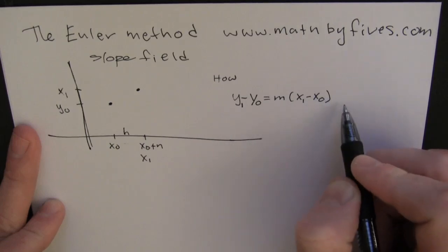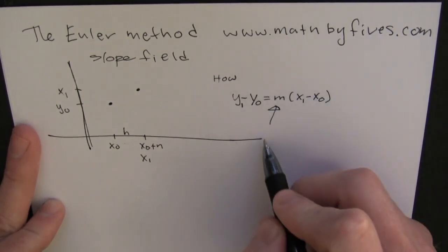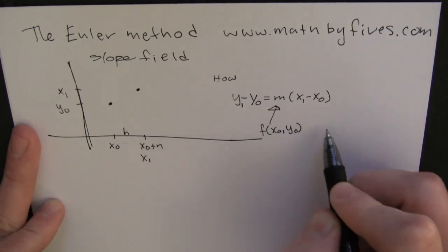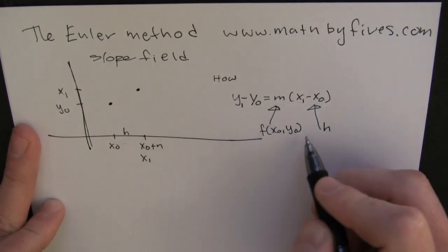So then, what are we going to do? We're trying to find our new height value, but we do know that the slope, m, is going to come from our slope field when we evaluate. And our new h.